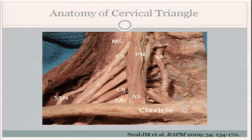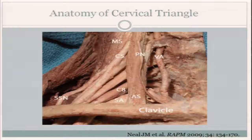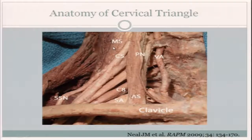Let's begin with the anatomy of the cervical triangle. You're probably all very familiar with this view, but I'd like to reiterate its importance in the interscalene nerve block, and we'll talk a bit about historical approaches prior to ultrasound. This image shows the brachial plexus — the C5, C6, C7, and C8 nerve roots. The middle and anterior scalene muscles sandwich the brachial plexus, and at the upper trunks you can see the takeoff of the suprascapular nerve.